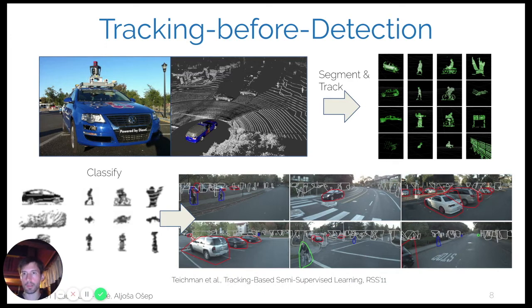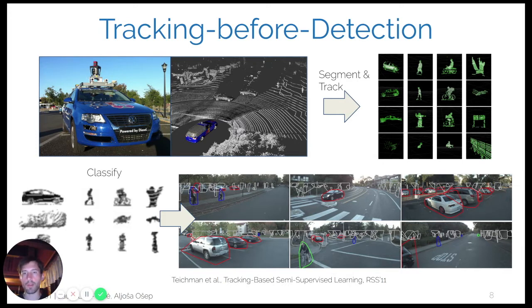This paradigm of segmenting and tracking objects before necessarily recognizing them connects with developmental psychology — there is evidence that infants learn to segment and track objects at very early stages before they can recognize object categories. The question of how to learn to segment and track objects remains open. In the remainder of this lecture, we focus on the tracking by detection paradigm, because these methods are now very well understood and significant progress has been made in recent years.